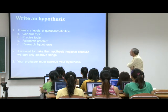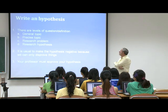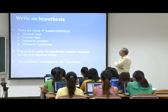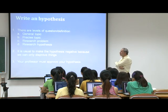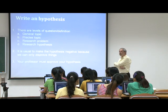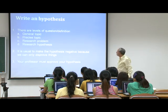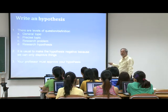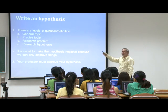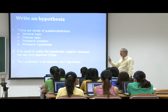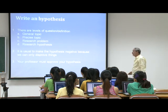There are levels of question definition. At the most general level is the general topic; from that emerges your precise topic; from your precise topic you head into a research problem; and from your research problem you head into a research hypothesis. It might sound abstract now, but when you come to do it, it's not as complicated as it looks. It's usual to make the hypothesis negative, because we can only disprove things. That's why in statistical tests we say we're testing that there is no difference — we're trying to show there is no difference because we can't prove the positive.